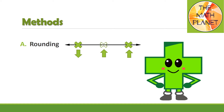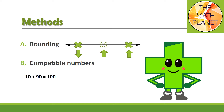Another method for estimating numbers is to use compatible numbers. In addition, compatible numbers are pairs of numbers that are easy to add mentally, such as parts of 10. For example, if I know that 1 plus 9 equals 10, this will help me to add faster. Similarly, 10 plus 90 equals 100. Other examples are 50 plus 50 equals 100, or 25 plus 75 equals 100.